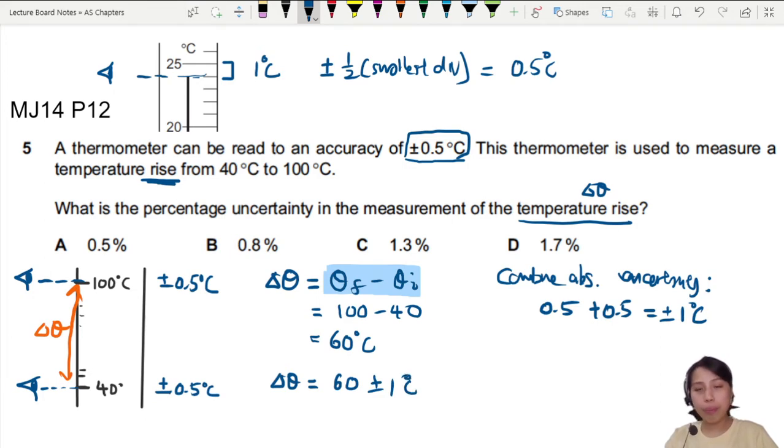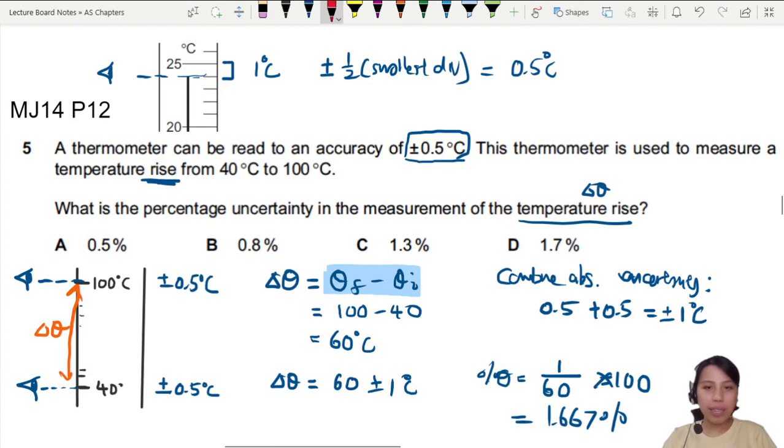But we want to find the percentage, right? So we have to find percentage uncertainty in theta. That will be one Celsius over 60, times 100. Forgot times 100. This one will give us one over 60 times 100%, 1.67% is going to be best answer D for this question.